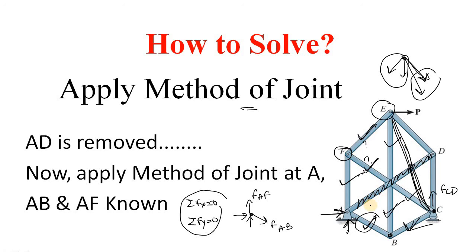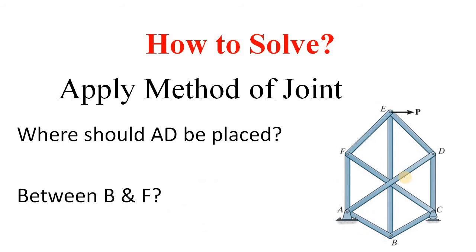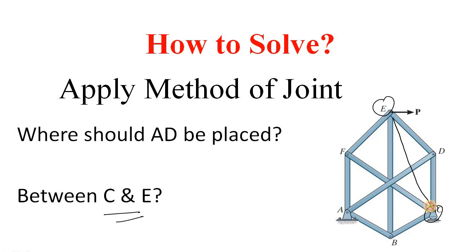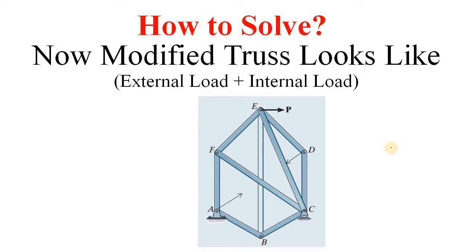I think you have got the idea of how to remove the member first, then how to replace or reallocate it. After removing and reallocation, the truss will look like this. We have checked between BF and CE, and CE is the correct location. We have relocated this member — so now in the modified truss, there is no AD member; rather, we have replaced it between E and C.